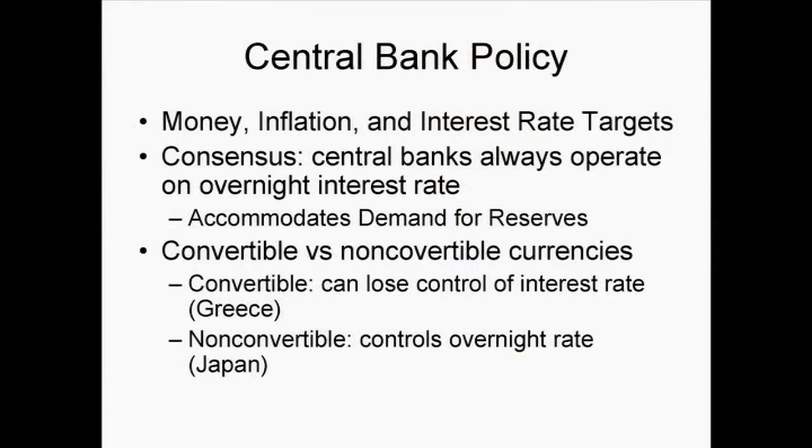A budget surplus is the opposite — you're always draining reserves out of the system and you've got to put them back in through open market purchases. Central bank policy: we've had a long history of debate about whether the central bank should have a money target, an inflation target, or an interest rate target. Economists have finally reached a consensus: central banks always operate with an overnight interest rate target. No matter what they tell you, that's what they're actually doing. And that means they have to accommodate exactly the demand for reserves or they'll miss their target.